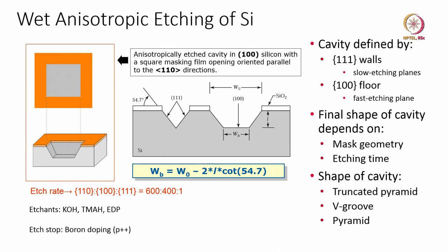Etchants such as KOH, TMAH, and EDP are used; the etch stop can be silicon dioxide or a boron etch stop. The 54.7° angle is created because the (100) orientation etches faster and the (111) orientation etches slower. The (100) plane is the floor (faster etching) and the (111) plane forms the wall (slower etching). The final shape of the cavity depends on mask geometry and etching time, producing shapes like truncated pyramids, V-grooves, and full pyramids.